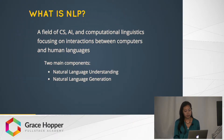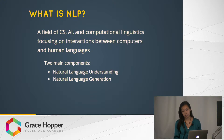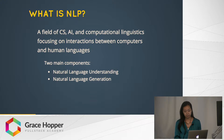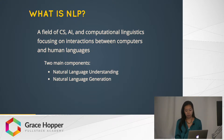Natural language processing is a field that combines computer science, artificial intelligence, and computational linguistics to allow machines to interact with instances of human language as unstructured forms of data. It can be defined as the processes that give computers the ability to analyze, interpret, and derive meaning from human language, as well as the ability to produce and generate human language.